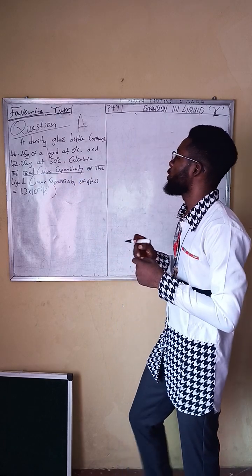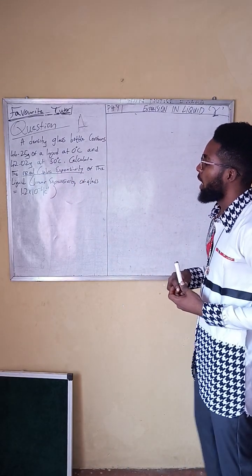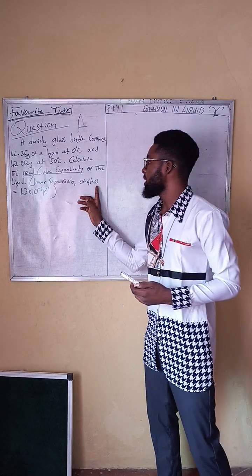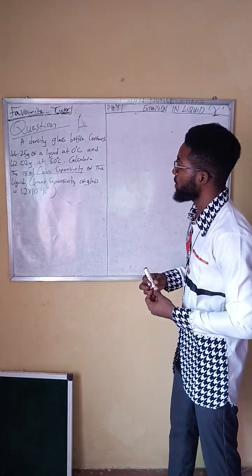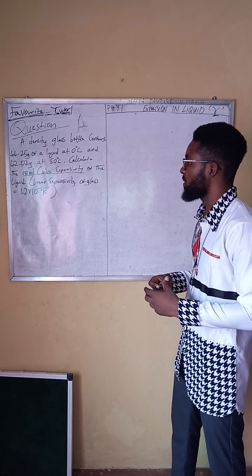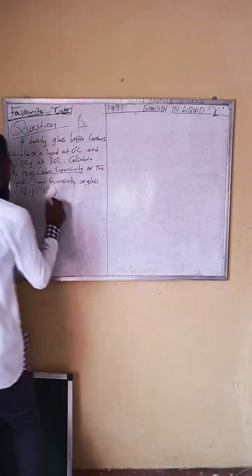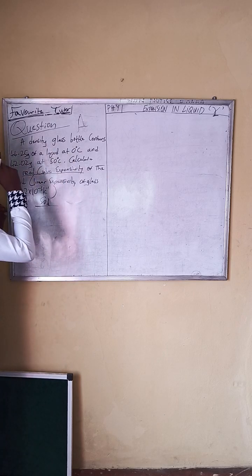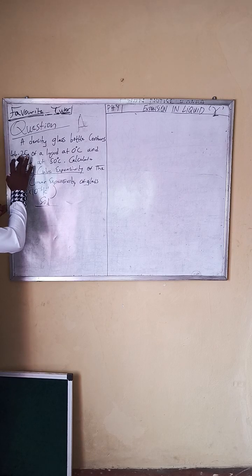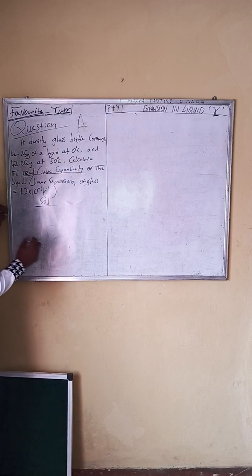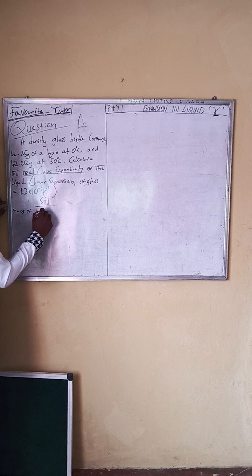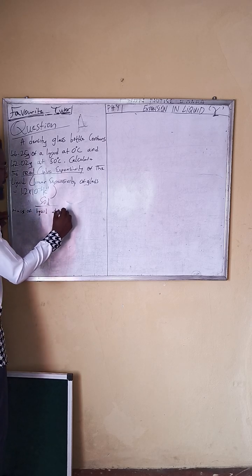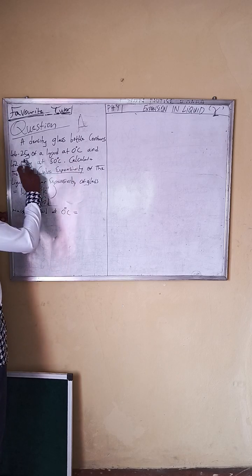So we are looking for the real cubic expansivity of the liquid, and we are given the linear expansivity of the glass — that is the linear expansivity of the container vessel. The first thing in the solution: the glass bottle contains 44.25 grams of liquid. So we have the mass of liquid at zero degrees Celsius.